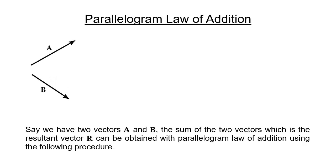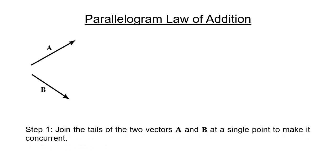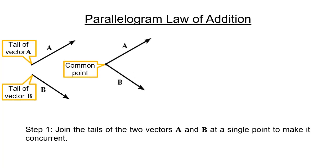In vector addition, let's show first how to perform the parallelogram law of addition. For the first step, join the tails of the two vectors. The tail of vector A and the tail of vector B must meet at a single point to make it concurrent, or intersect at a common point.